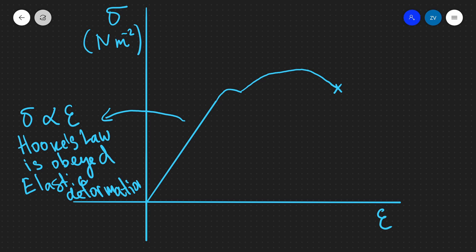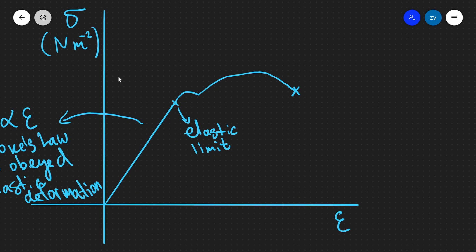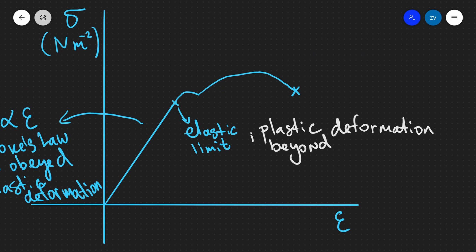As soon as we reach the elastic limit and go past it, the graph is no longer a straight line through the origin. This entire region to the right of the elastic limit is a region of plastic deformation — the material does not return to its original shape once the force is removed.